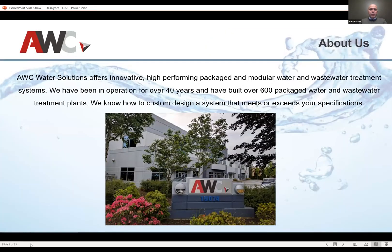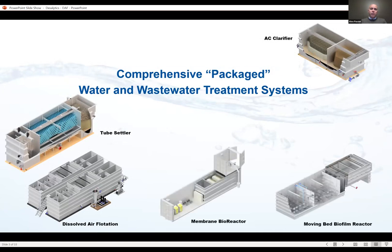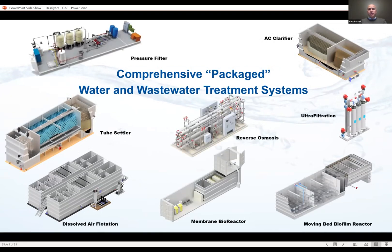Just a little background on AWC: we've been around for 40 years. We design and build water and wastewater treatment plants. We have close to 600 plants worldwide. They're all modular. So when we think of out of the box, they're essentially literally modular plants. Everything is divided into three different categories: modular potable water, wastewater, and package systems. A lot of times they're interconnected — you might use one process connected to another depending on the specific application and site work.